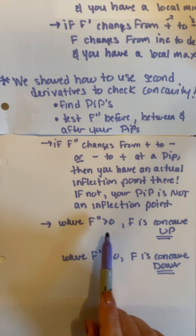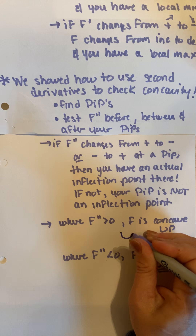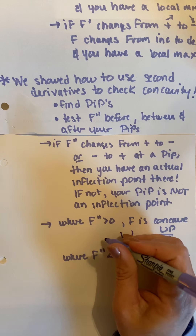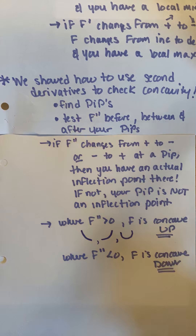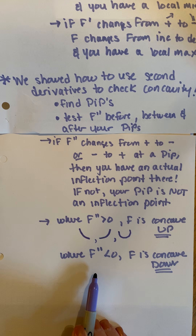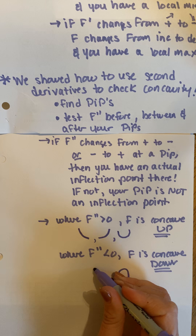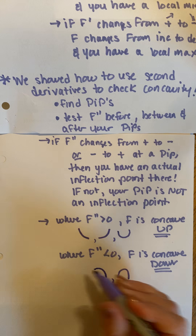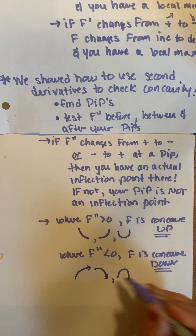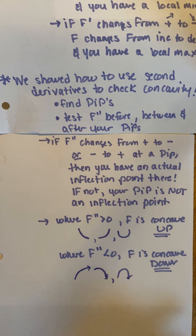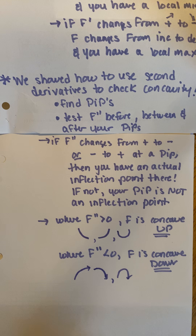If the second derivative does not change sign to the right and left of a potential inflection point, then that potential inflection point is not an actual inflection point. Wherever the second derivative is positive, the original function is concave up — it could be concave up and increasing, or concave up and decreasing. Wherever the second derivative is negative, the function is concave down. So that's what we did in those sections with several examples.